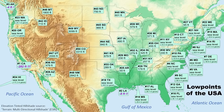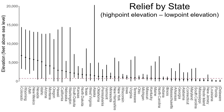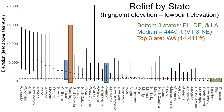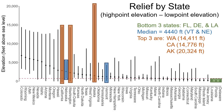The final map shows low points of the United States. As a bonus, total relief by state is examined — states listed from highest to lowest mean elevation, with a red dashed line showing the U.S. mean elevation. The bottom three states for relief are Florida, Delaware, and Louisiana. The median relief is about 4,440 feet, closest to Vermont and Nebraska. The top three for vertical relief are Washington, California, and Alaska — Alaska being by far the highest because of the massive Mount Denali.